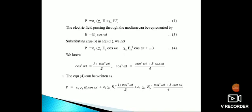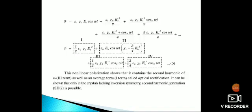Equation 4 can be written as P = ε₀ψ₁E₀ cos ωt + ε₀ψ₂E₀²(1 + cos 2ωt)/2 + ε₀ψ₃E₀³(cos 3ωt + 3 cos ωt)/4. So P = ε₀ψ₁E₀ cos ωt + ε₀ψ₂E₀²/2 + ε₀ψ₂E₀² cos 2ωt/2 + ε₀ψ₃E₀³ cos 3ωt/4 + 3ε₀ψ₃E₀³ cos ωt/4, etc.